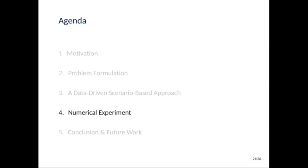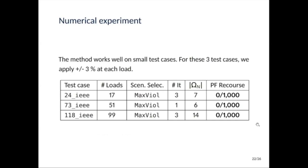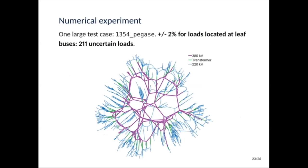So to see how the method scales, I'll show some numerical results. Just to confirm that everything was working fine, we test the approach on three small test cases from 24 to 118 buses. We managed to solve the problem and the size of omega n was small enough. But the real challenger was this test case where we had more than a thousand buses and we assume that we perturbed the load by plus or minus 2% at the leaf nodes. You can see them as the consumer buses and that's why we perturbed only them. In total, we still have more than 200 loads.